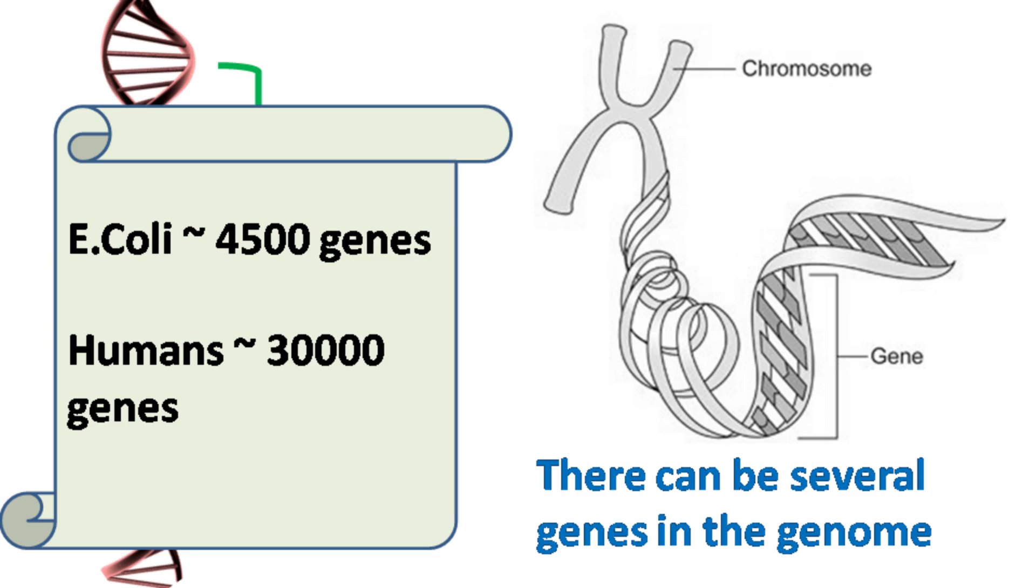For example, E. coli has roughly 4,500 genes while humans have 30,000 genes.